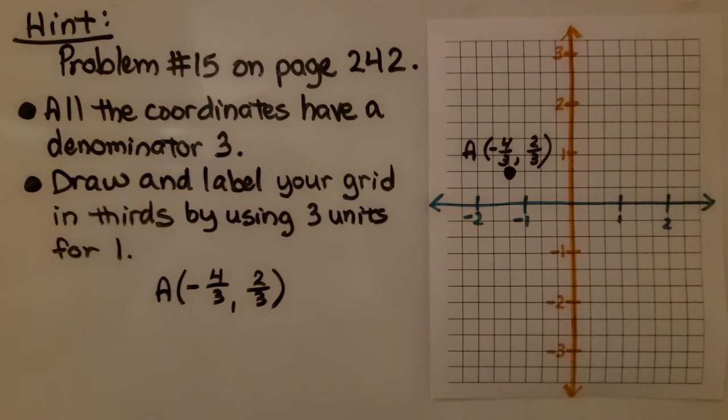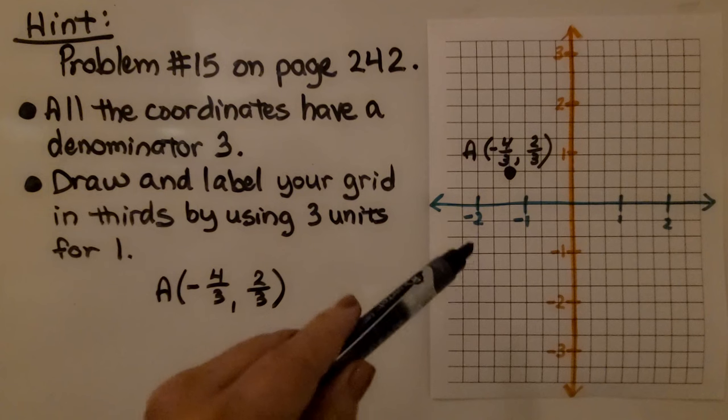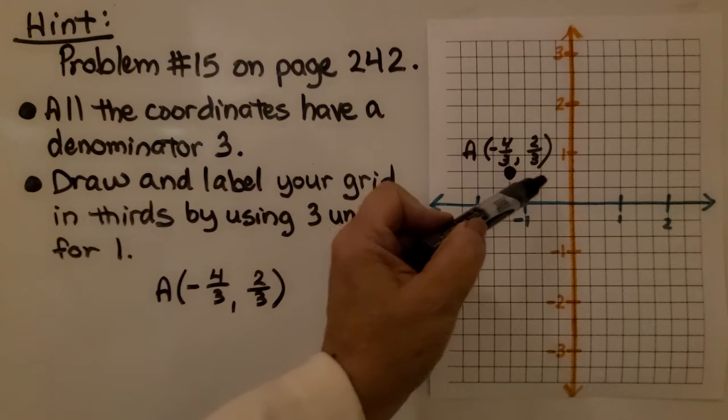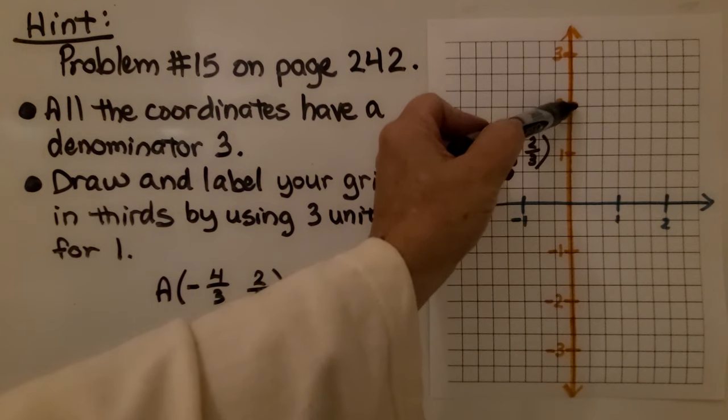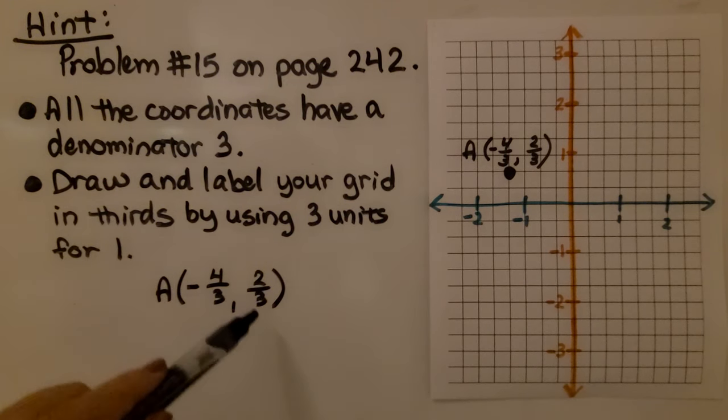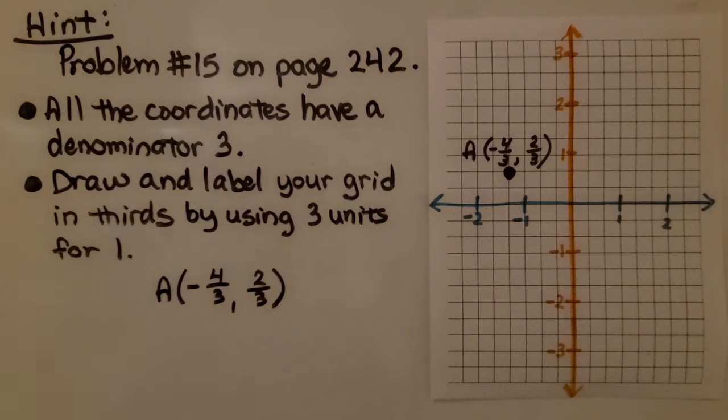Now, before we go, I wanted to give you a little hint. When you start doing the homework and the problems in the back of the lesson, problem number 15 on page 242 has given some of my subscribers some problems. All the coordinates have a denominator of three. What you do is, when you're drawing your grid, draw the increments in thirds and you can use three units to be one. So that would be one third, two thirds, one whole, one and one third, one and two thirds, two whole. See what I mean? So that when you want to plot a point like negative four thirds for x and two thirds for y, it's very easily done. That will help you.